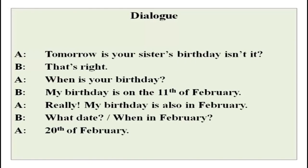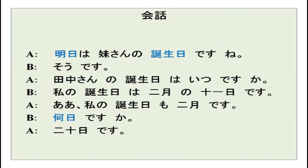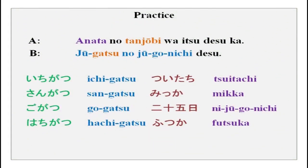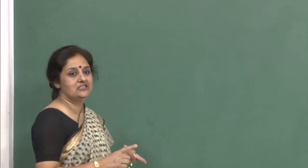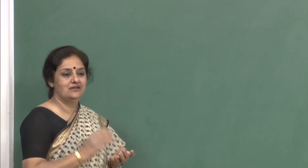All these words you have already covered. The new word here is tanjoubi, which means birthday. So how do you tell about your birthday? This explanation is in English and in the script, and you can see a lot of new kanji characters and hiragana.